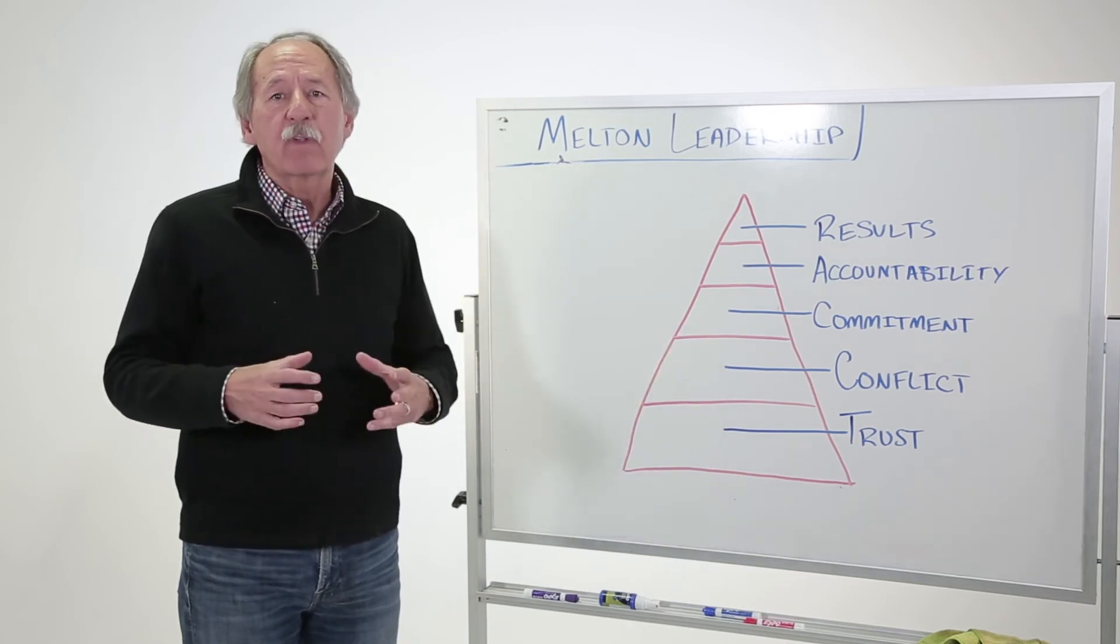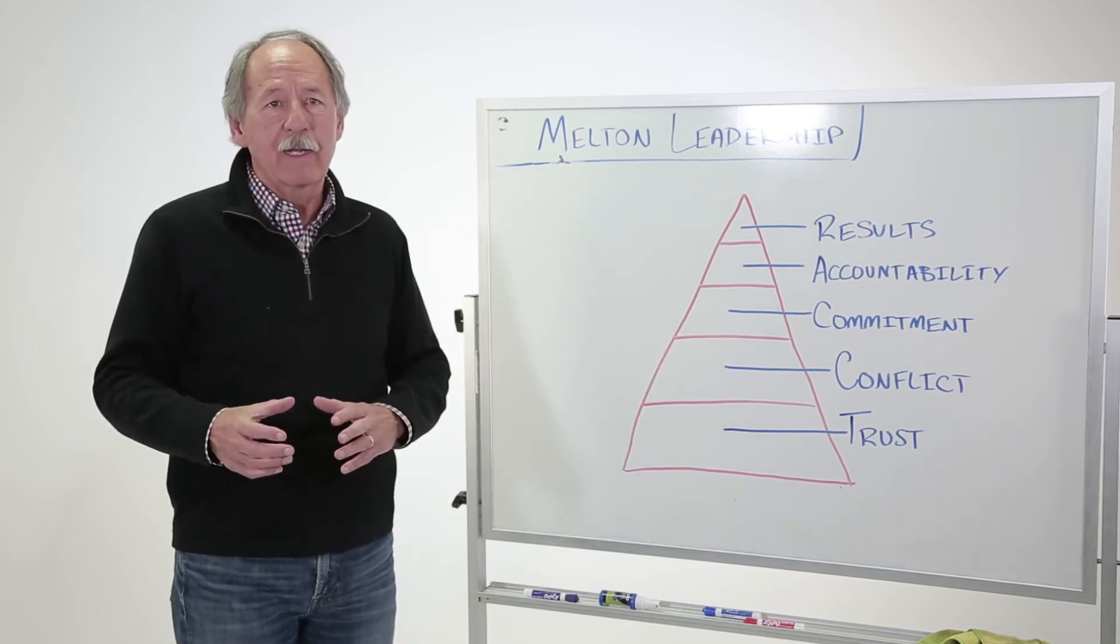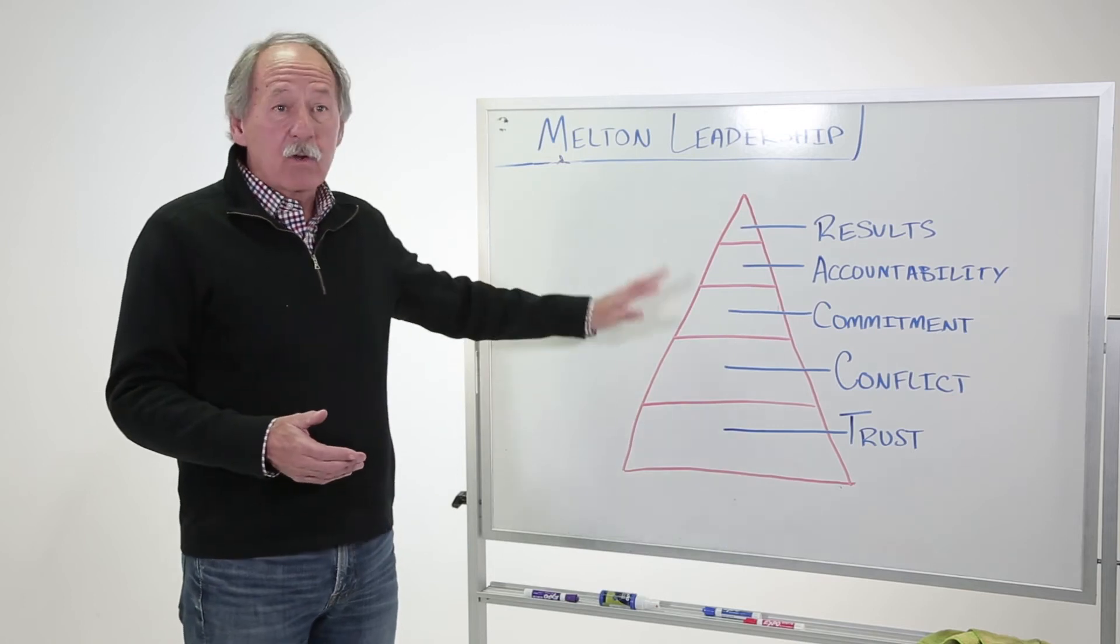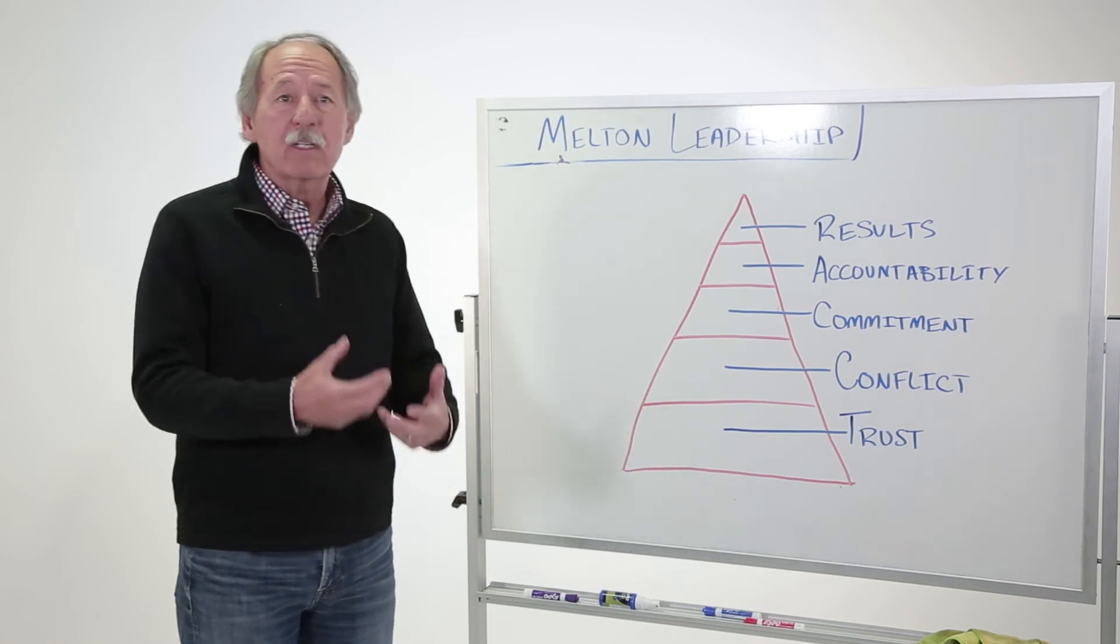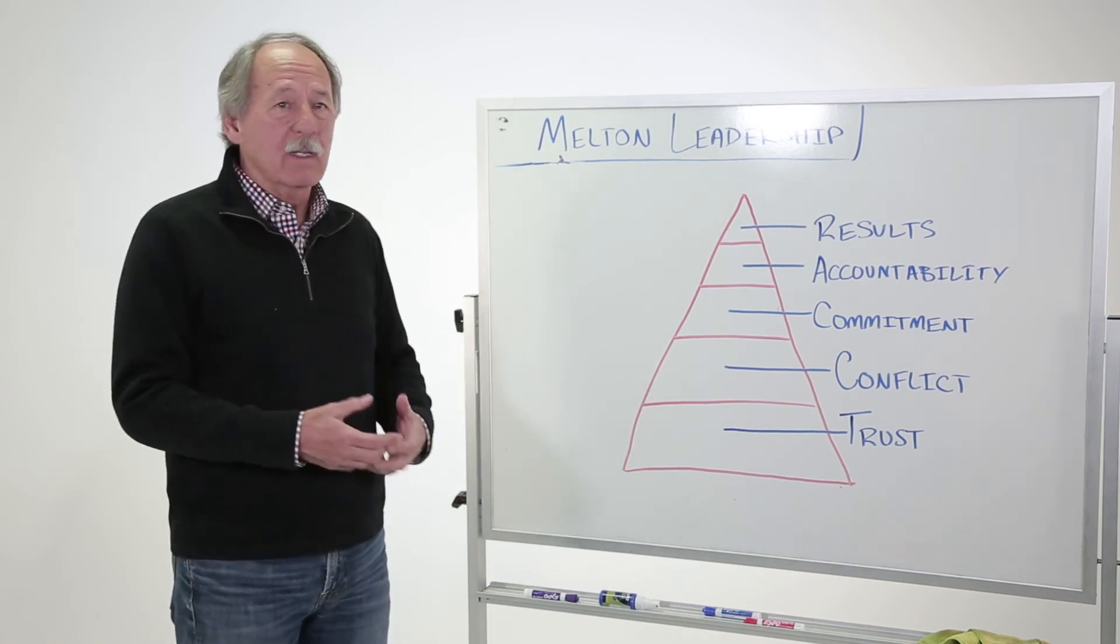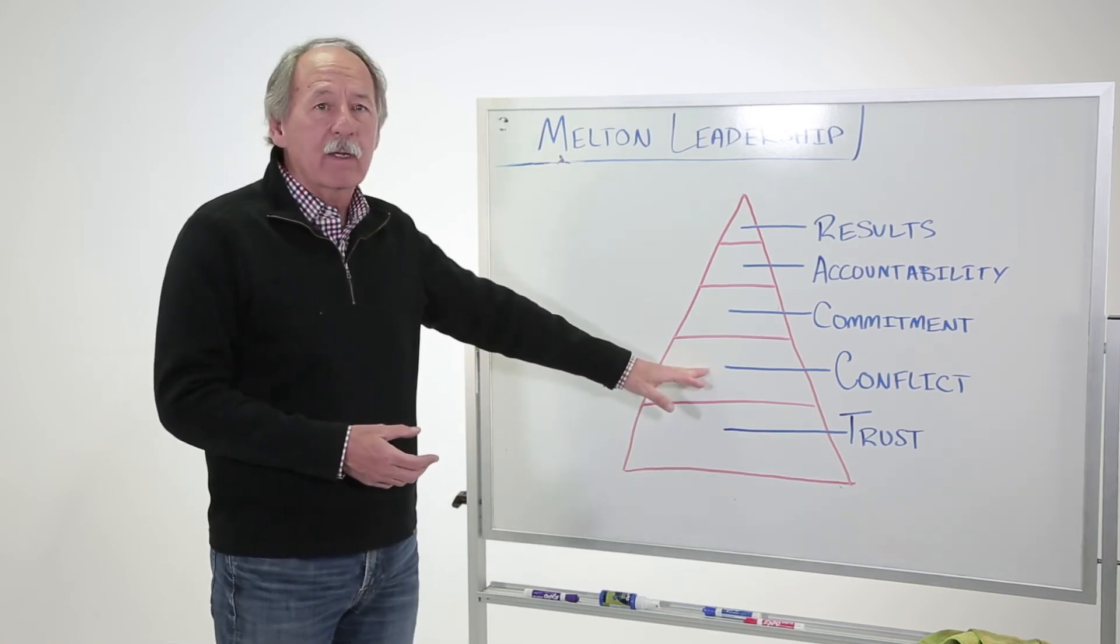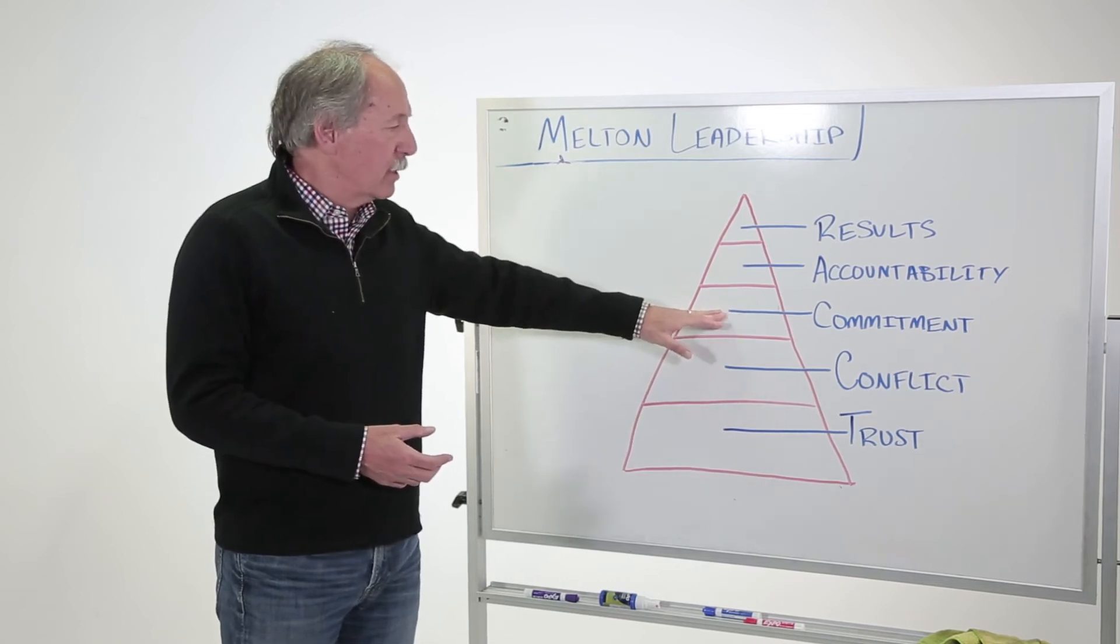And healthy conflict is conflict around ideas, not around personalities or people. A lot of groups have conflict, but they tend to be around personality. So therefore, you don't get the best out of your people. You don't get the best out of the team. When you have healthy conflict, that leads to the third piece, which is commitment.